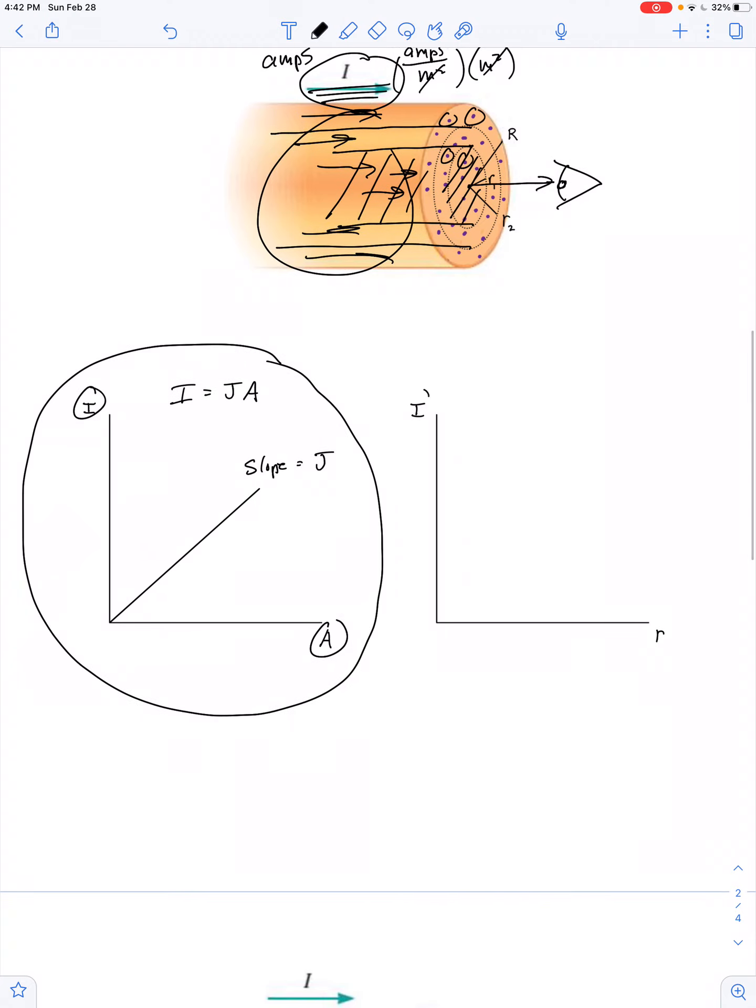What's that mean for a graph of current versus r? As r goes from r1 to r2 to capital R, well, cross-sectional area is pi r squared. So, I is equal to J pi r squared. So, now we have a graph that looks like a parabola. The current is proportional to r to the second power.